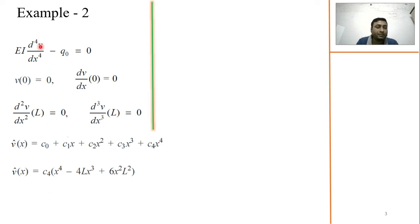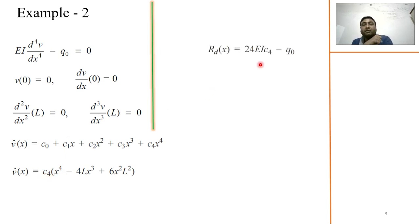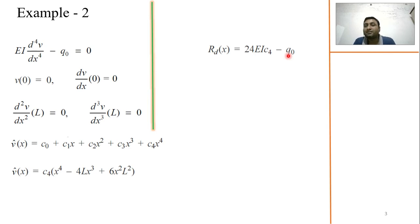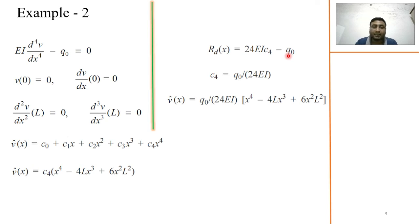When you substitute v̂ into the differential equation, the cube and square terms become zero on repeated differentiation. The fourth derivative of x⁴ = 24. So RD = EI·24c₄ − q₀. Since RD is not a function of x here, we set RD = 0, which gives c₄ = q₀/(24EI). Substituting c₄ back into the trial function gives the approximate solution of the given differential equation.